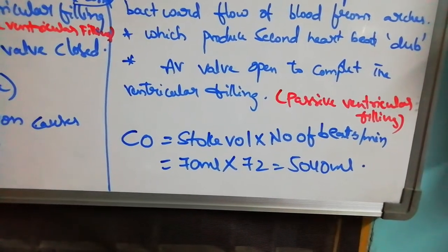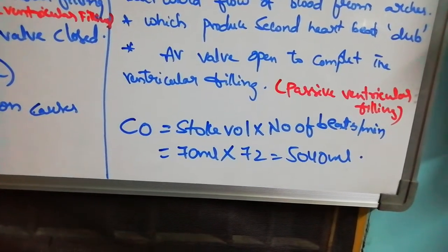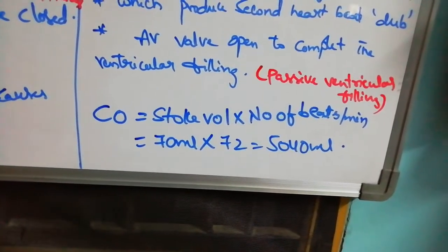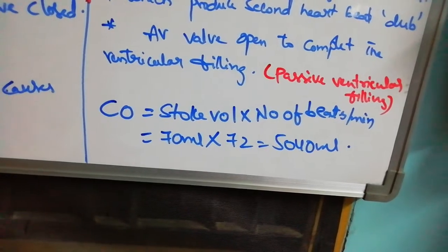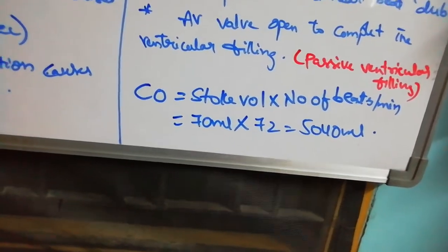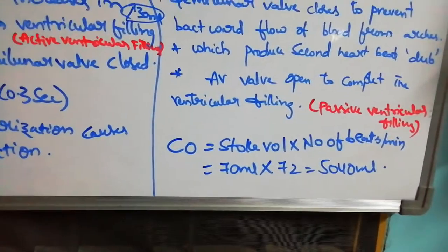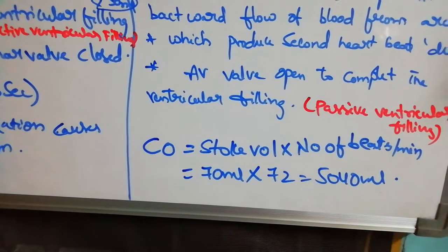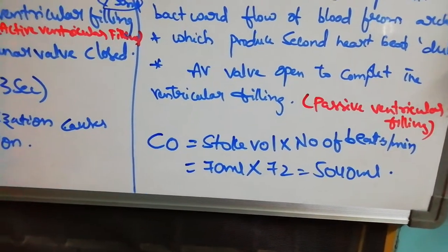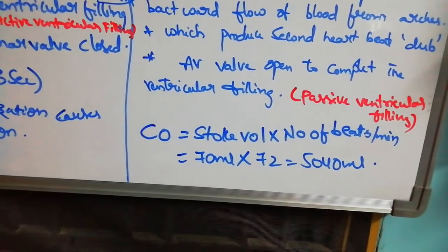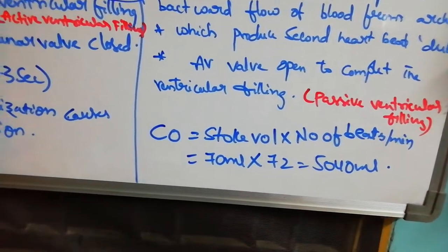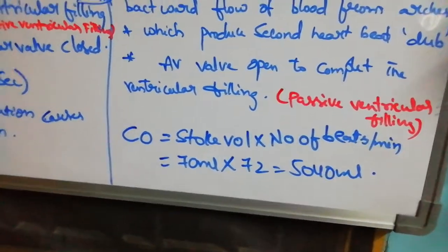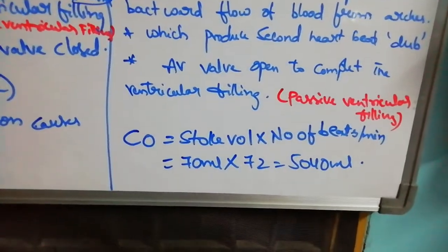During vigorous exercise, cardiac output increases due to an increase in the number of heartbeats, reaching approximately 21 liters. In athletics, both stroke volume and heart rate increase, so cardiac output can reach up to 35 liters.